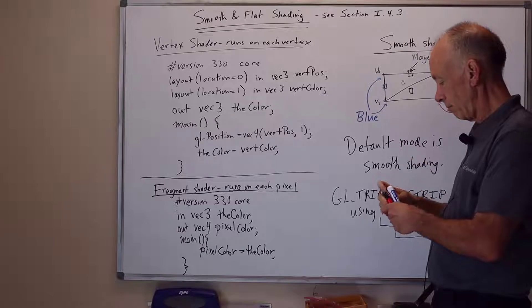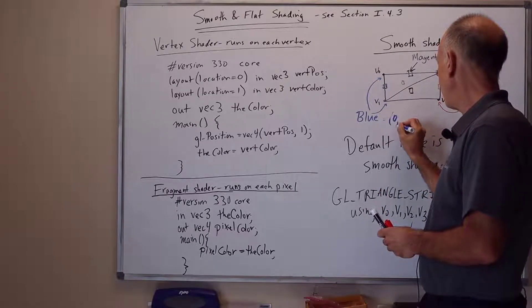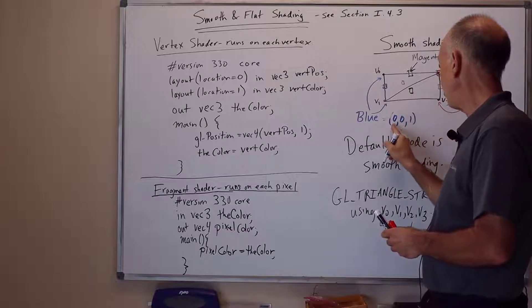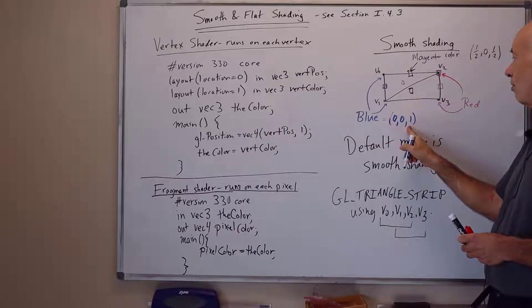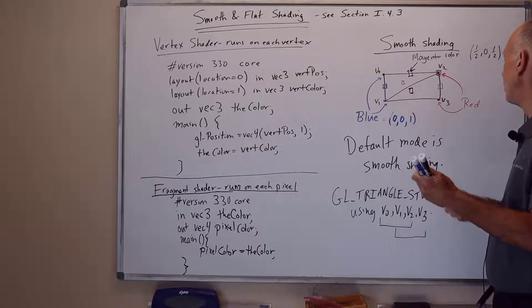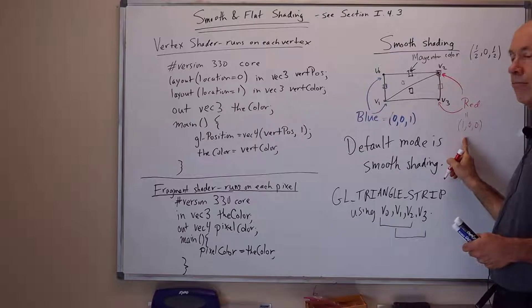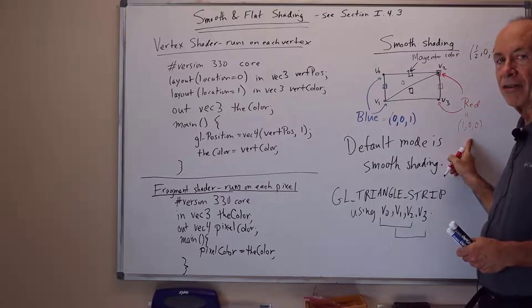So blue is represented by the triple 001. That has no red, no green, full on blue. And red is represented by the triple 100. Red is turned fully on, no green, and no blue.